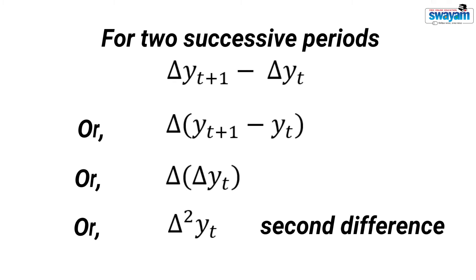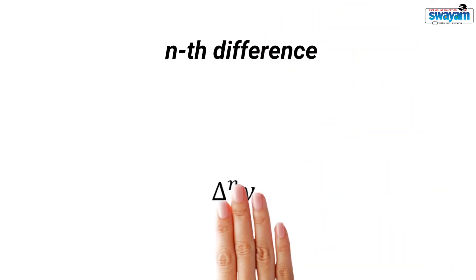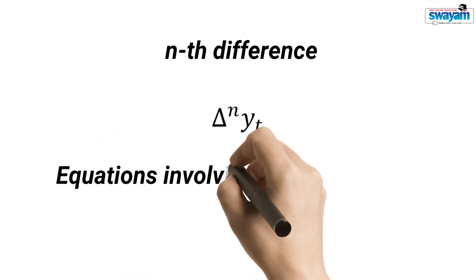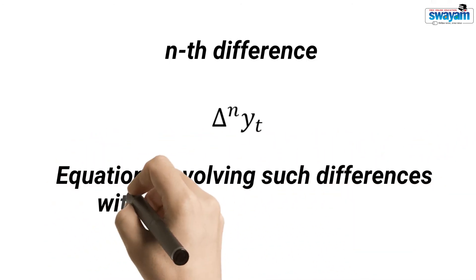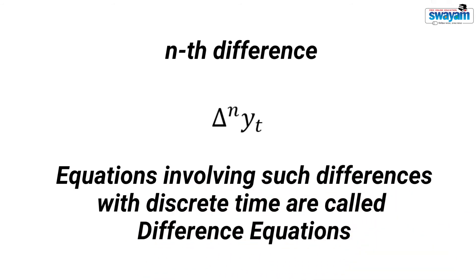Repeating this process till the nth difference, the nth difference may be represented by delta to the power n yt. Equations that involve such differences with discrete time are called difference equations.